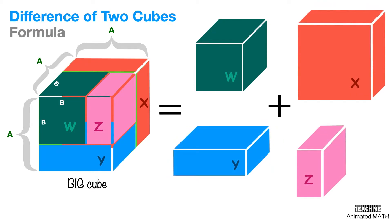For box W, all sides are equal to B. For box X, two sides are equal to A and one side is equal to A minus B. For box Y, the sides are A, B, and A minus B. For box Z, two sides are equal to B and one side is equal to A minus B.